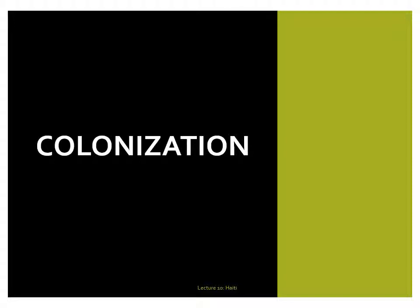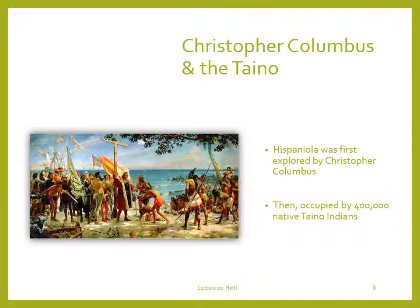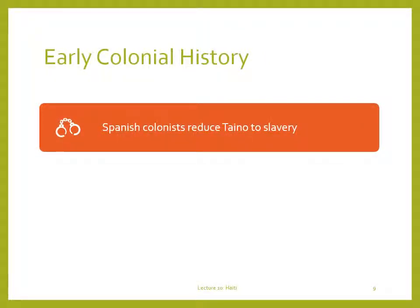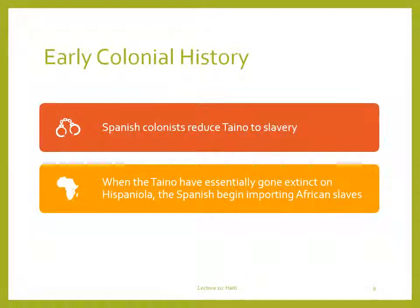To understand Haiti's current culture, we must understand its history of political and social conflict. The island of Hispaniola was first explored by Christopher Columbus, who found a large population of native farmers living there. These people, known as the Taino, were widespread throughout the Caribbean in the late 15th century, with Hispaniola's population in the hundreds of thousands. Spanish colonists took control of Hispaniola and reduced most of the natives to slavery. By the middle part of the 16th century, the Taino were essentially wiped out, and colonists began importing African slaves to replace them.